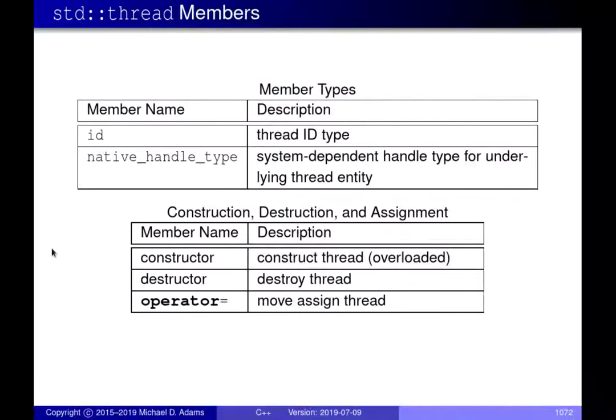In the last lecture we talked about the std::thread class in the standard library. This class allows us to create threads. There's a member type called ID which corresponds to the type used to represent the thread ID. Every joinable thread has a unique ID, and this is the type used to represent it.